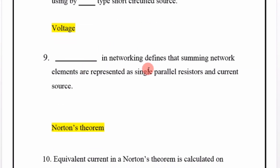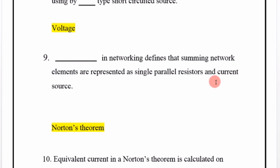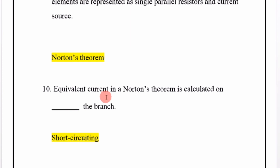Norton's theorem defines that summing network elements are represented as a single parallel resistor and current source. The equivalent current in Norton's theorem is calculated by short-circuiting the branch.